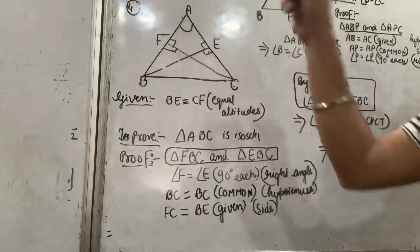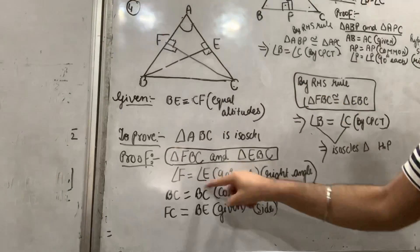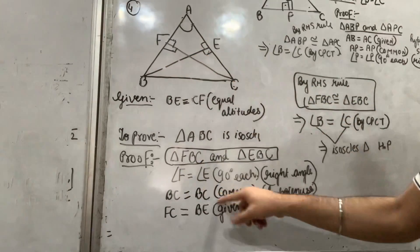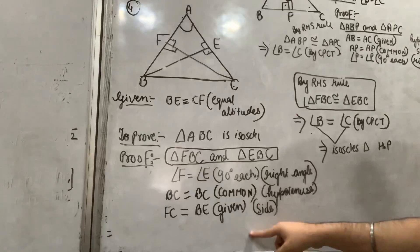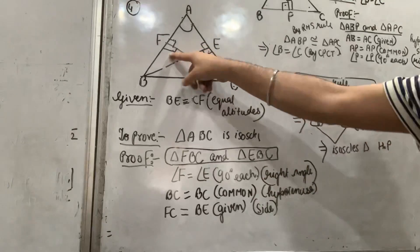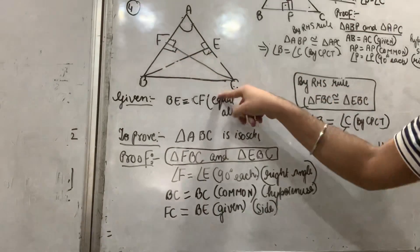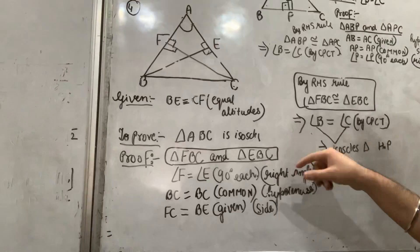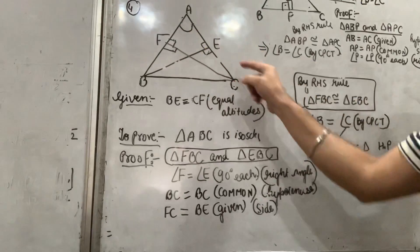Proof: Consider triangles FBC and EBC. By RHS rule, right angle hypothesis side rule, FBC is congruent to EBC.